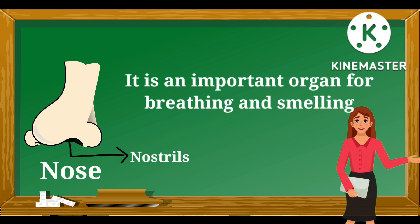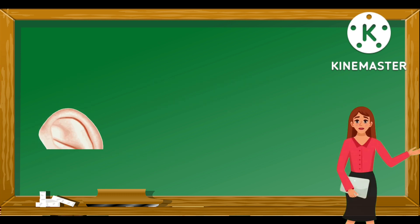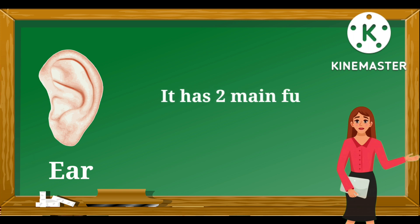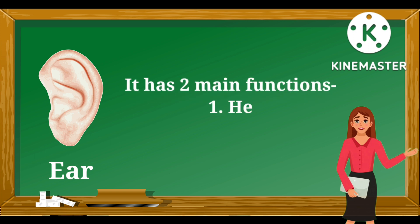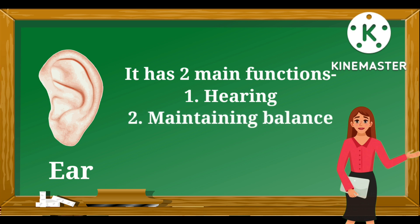The nose also extracts debris through exhalation. This is an ear — E-A-R. It is located on either side of the head. The ear has two main functions: number one, hearing; and number two, maintaining balance.